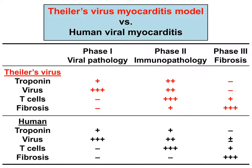In conclusion, Theiler's virus induces myocarditis with three distinct phases, each mediated by direct viral pathology, immunopathology, and fibrosis. Since the profiles of the three phases in Theiler's virus-induced myocarditis are similar to those in human myocarditis, our novel myocarditis model can provide translational information as to how myocarditis develops in human viral infections.